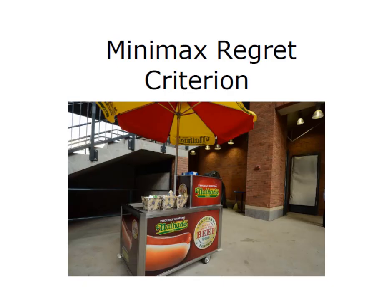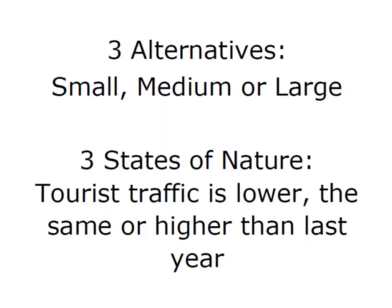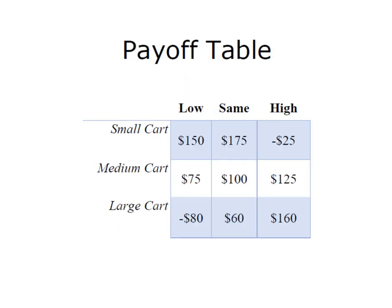I'm continuing with my hot dog stand example. I had three alternatives: I could open a small, medium, or large hot dog cart here on the Outer Banks, and I identified my three states of nature as tourist traffic being either lower, the same, or higher than last year. I created my payoff table by looking at each state of nature and each decision alternative and determining what the payoff would be.